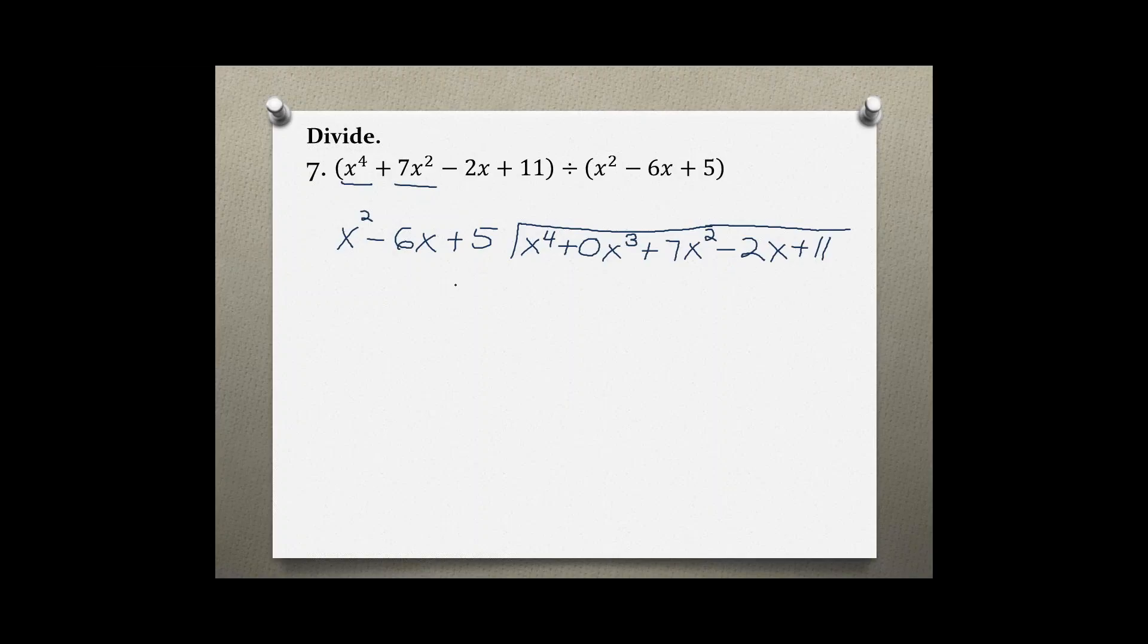Now, we have to ask ourselves, by what do we need to multiply x squared to get x to the 4th power? We have to multiply by x squared, because x squared times x squared gives us x to the 4th power, and then x squared times negative 6x gives us negative 6x cubed, and also x squared times 5, which is plus 5x squared.